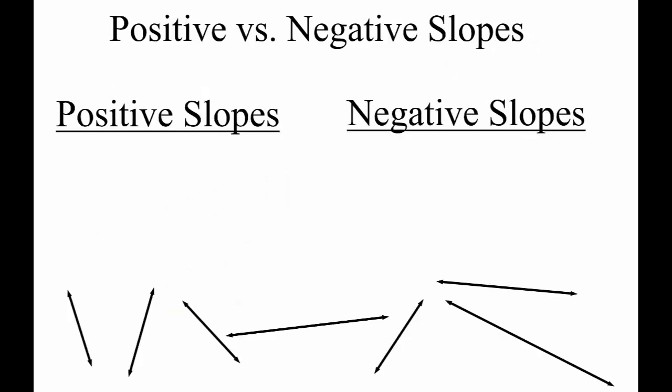It's important to read lines from left to right. Lines with a positive slope slant up. Let's find all the lines with positive slopes. These other lines all slant down from left to right, so they have negative slopes.